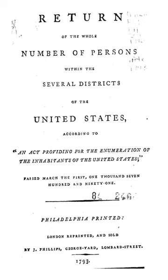The 1980 Census added several options to the race question, including Vietnamese, Asian Indian, East Indian, Guamanian, Samoan, and re-added Aleut. The word 'Color' was again removed from the racial question.